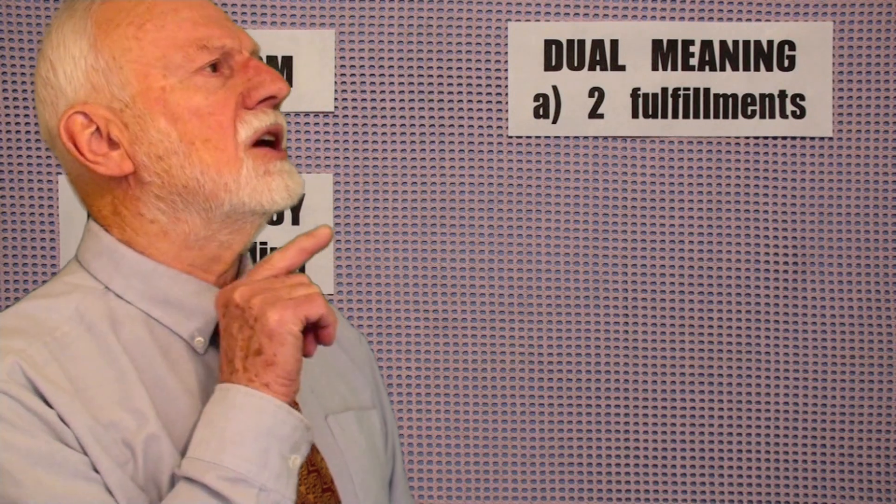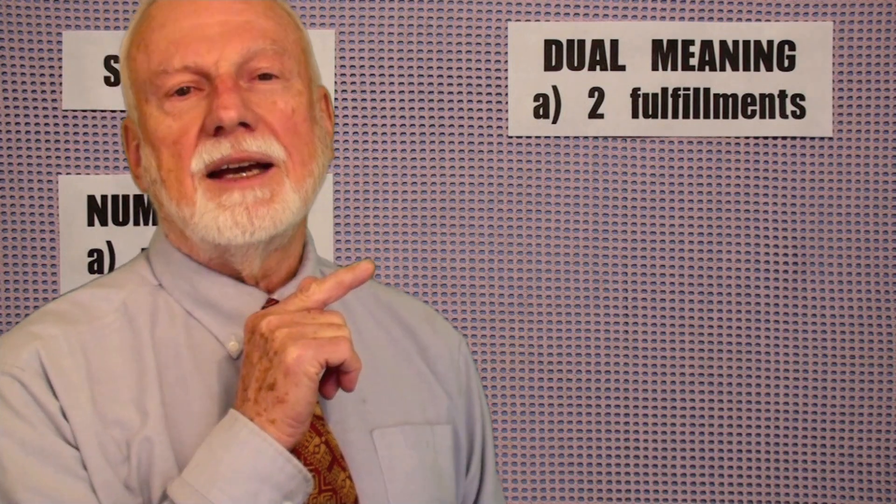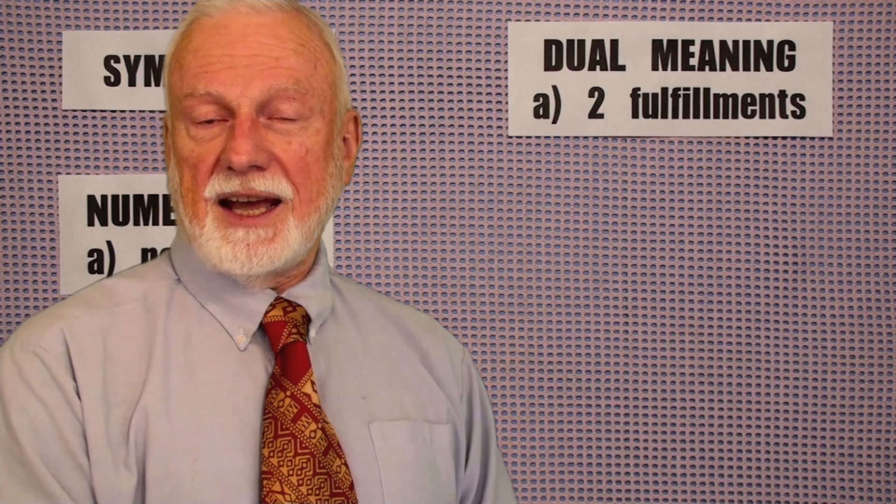The first of these is dual meaning. And sometimes there is more than two meanings, sometimes three and four meanings. I'm going to talk about in this program a prophecy that has four fulfillments. Sometimes the prophet tells you what those interpretations are. For example, the Scarlet Beast in the book of Revelation has seven heads. And John tells you that those seven heads symbolize seven kings and seven mountains.